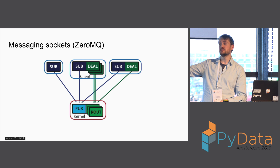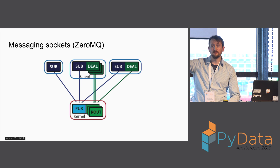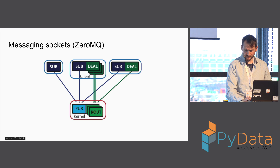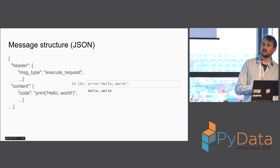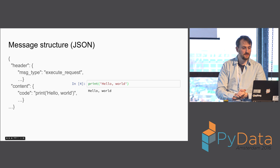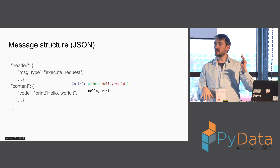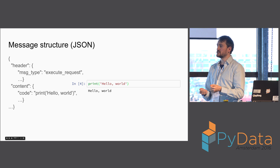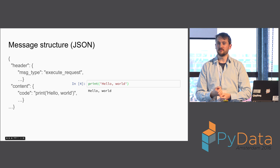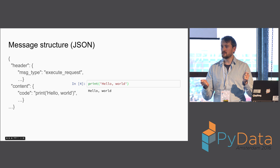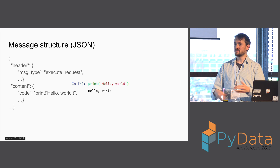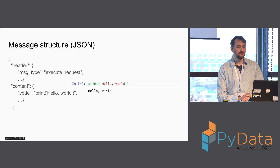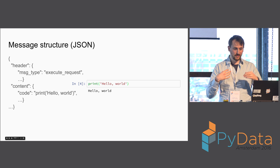What do these messages look like? 0MQ is the transport we use — a socket library that gives us some nice features. The format at a high level is really just a Python dictionary with a header containing some information about the message, and a body with the content of the message you're trying to send. So when you type in a notebook 'print hello world', the browser builds a message with a type 'execute_request'. You're requesting that some code be executed, and the body of that message has the code: print hello world.